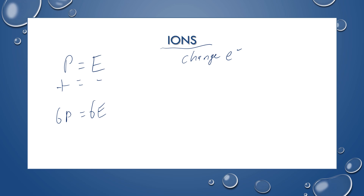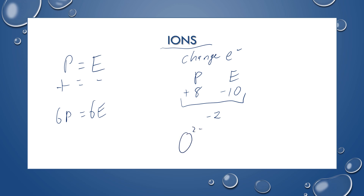Let's do oxygen. Oxygen has eight protons always — that's what makes it oxygen. If it was a neutral atom, it would have eight electrons so they cancel out. But oxygen likes to form ions where there are 10 electrons. So it would have a negative 10 charge from the electrons, and the total charge on an oxygen ion is negative two. We would write that as 2⁻ — in chemistry, we write the number and then the sign when talking about charge. This is a negatively charged ion; we call that an anion.